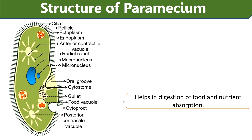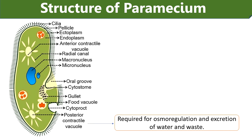Food vacuoles are formed by the budding of the gullet and function as temporary intracellular stomachs, breaking down consumed food for digestion. Contractile vacuoles are present on the anterior and posterior sides of paramecium and are required for osmoregulation and excretion of water and waste.